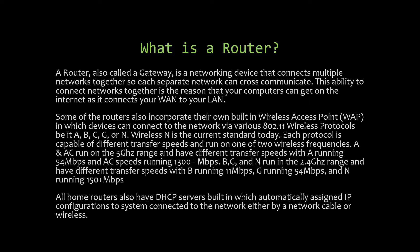Some routers also incorporate a built-in wireless access point, which your phone or laptop connects to via various 802.11 wireless protocols — A, B, G, or N. Wireless N is the current standard. Protocols A and AC run on the 5 GHz range, with A at 54 Mbps and AC at 1,300+ Mbps. Protocols B, G, and N run on 2.4 GHz, with B at 11 Mbps, G at 54 Mbps, and N at 150+ Mbps.